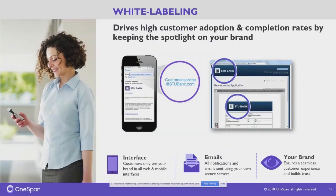What differentiates OneSpan from other vendors who also present documents for signature and capture electronic evidence? One key area is adoption through white-labeling capabilities: the entire signing process can be branded as your company only, with no 'Powered by OneSpan' or eSignLive slogan. The user experience and signing process display only your brand, since signers are mostly your customers and it's your brand you want to put forward.